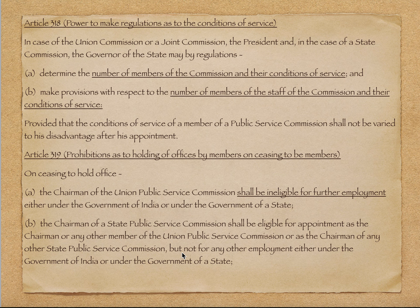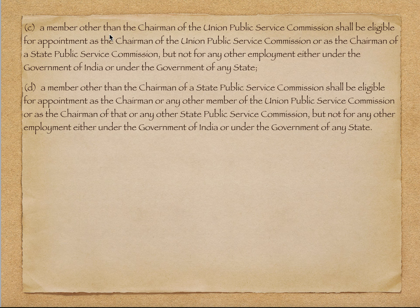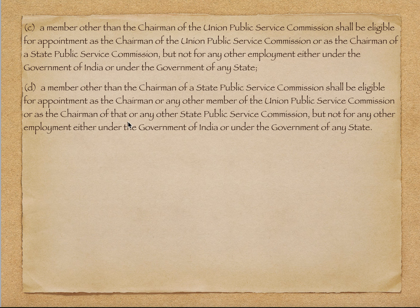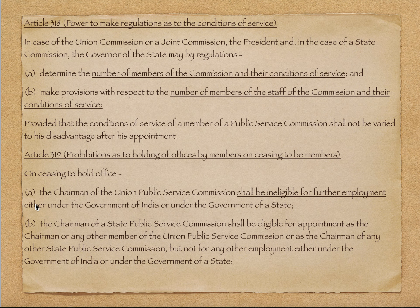Clause C: a member other than the chairman of UPSC shall be eligible for appointment as the chairman of UPSC and as the chairman of state public service commission। मतलब UPSC का कोई member है, उसके term खतम होने के बाद उसे कहीं भी employment नहीं मिल सकती under government — except as the chairman of UPSC, या chairman of any state public service commission। Clause D: a member other than the chairman of state public service commission shall be eligible for appointment as chairman or any other member of UPSC, या उसी या किसी और state public service commission का chairman या member।